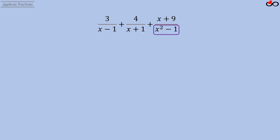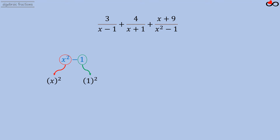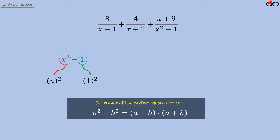The denominator of the third fraction, x squared minus 1, can be factored. This polynomial is a difference of squares: x squared is the square of x, and 1 is the square of 1. Recall that a squared minus b squared equals (a minus b) times (a plus b). Applying this formula, x squared minus 1 equals (x minus 1) times (x plus 1).